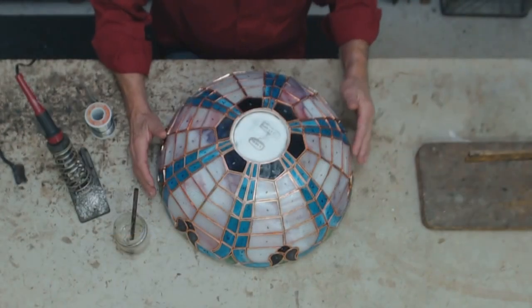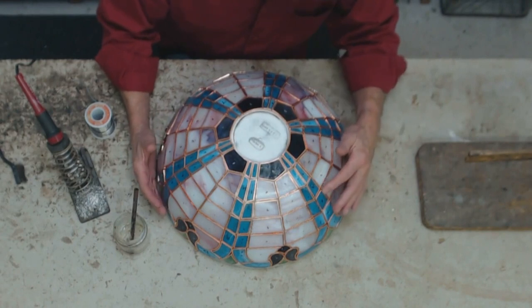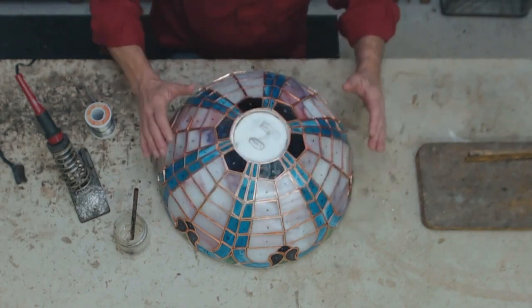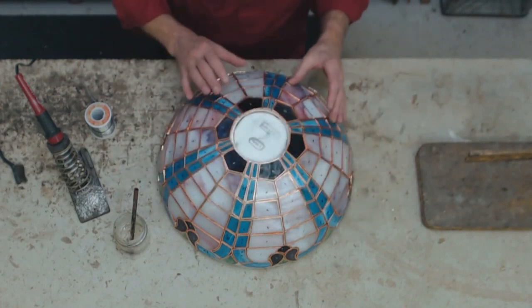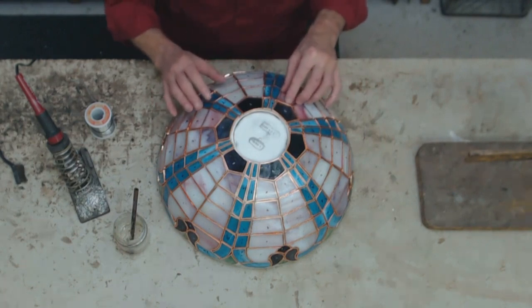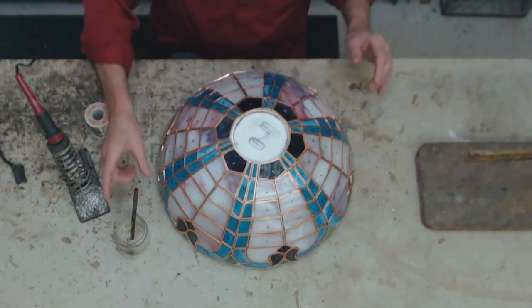You'll notice on some of the pieces that they jut out a little bit on one side or the other because all this glass is flat and this is a round mold. So as you're getting ready to solder and tack, just watch for any high points and you can readjust and tilt things back and forth.